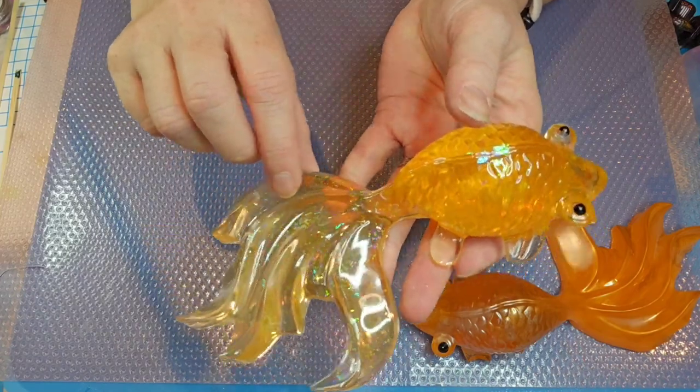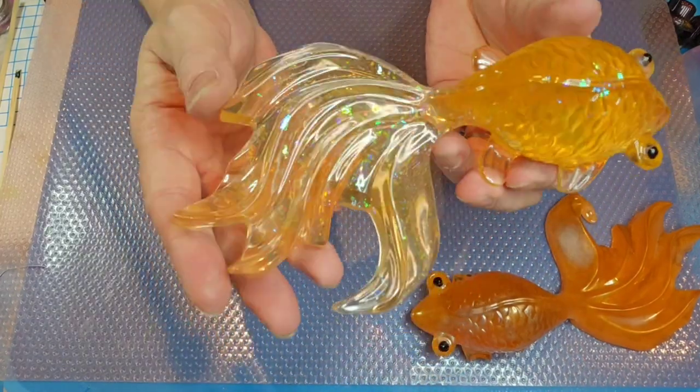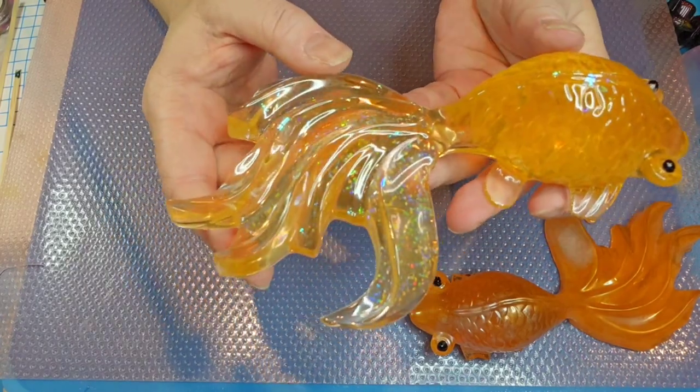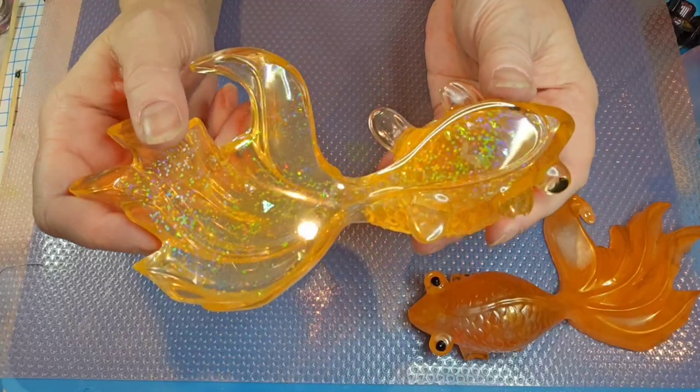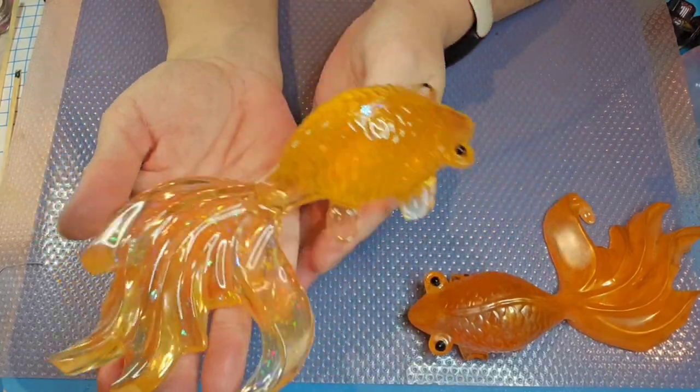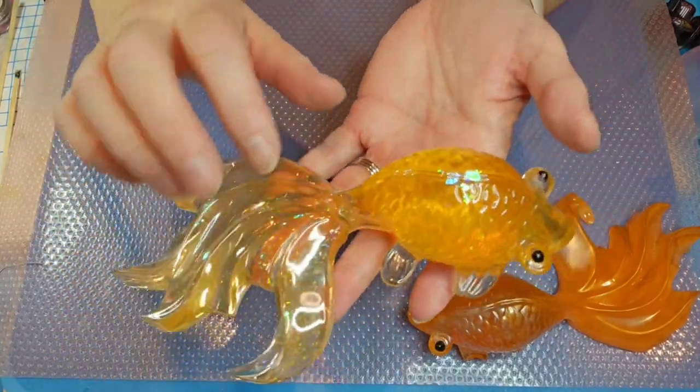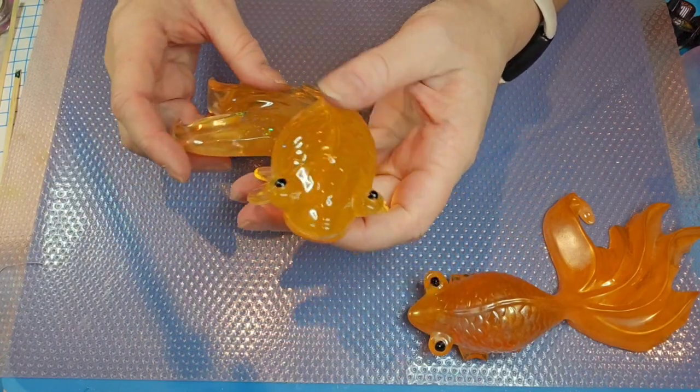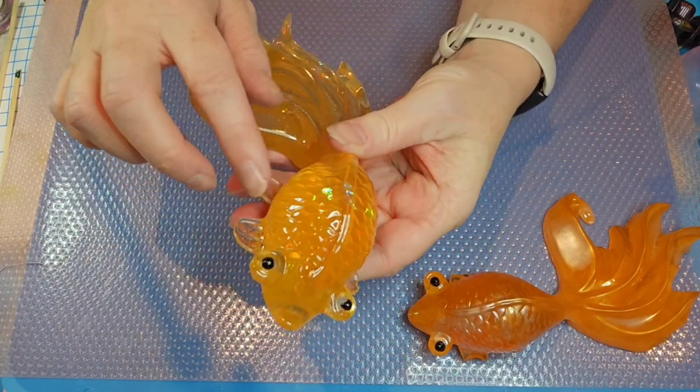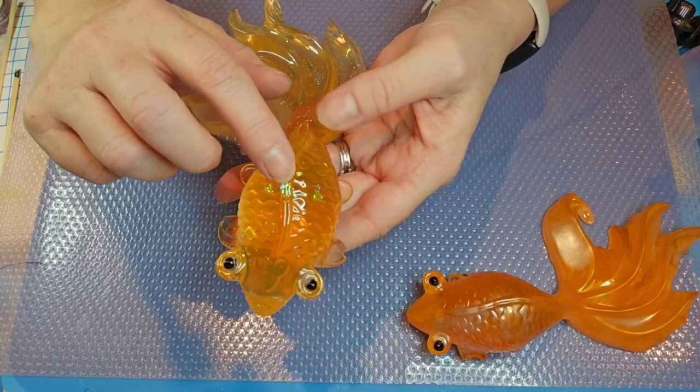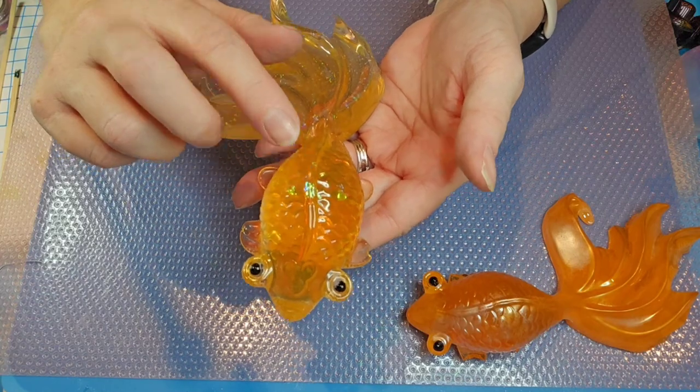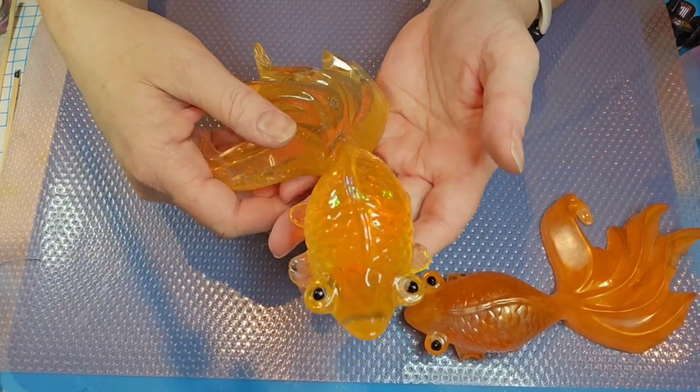You can see it pretty well in here in the bottom, and it did come through the tail, so that's pretty. You don't really see it a whole lot coming up through the body, probably because we had the orange in there. We did get a little bit of those holographic flakes that floated down, just a little bit there in the back.